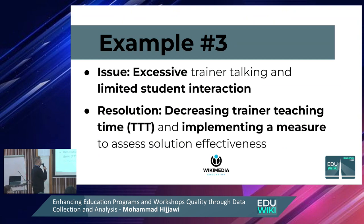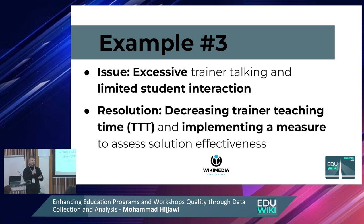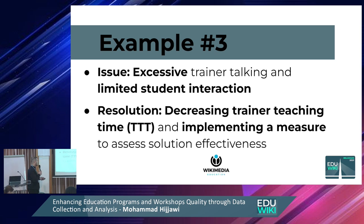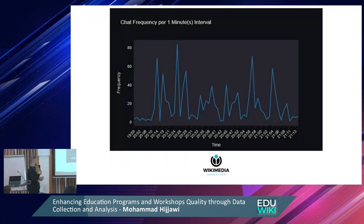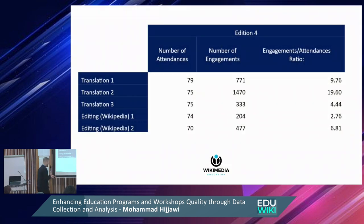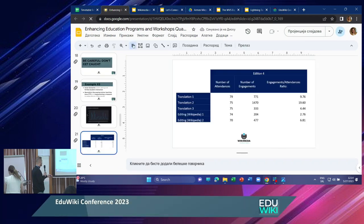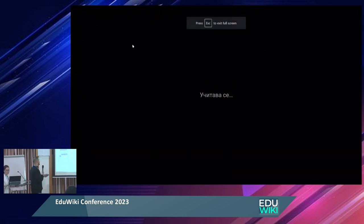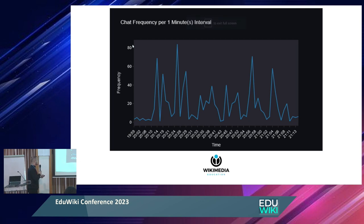Example three: most of my students told me I talk too much during sessions. The first thing I did was send a pre-survey to identify their interests and modify the workshop content to address only those. I also wanted to measure to what degree I was successful in decreasing my TTT — Trainer Teaching Time — so I implemented a measure: analyzing Zoom chat engagement. This shows the time frame of a session.